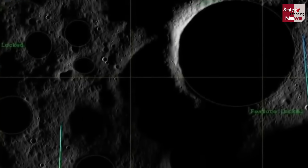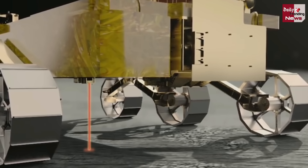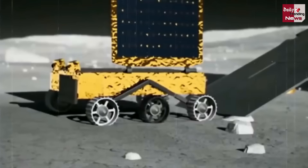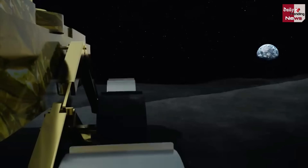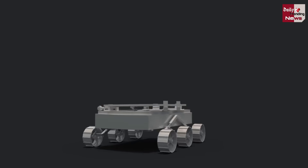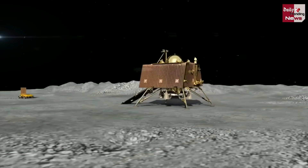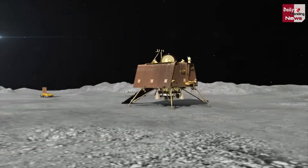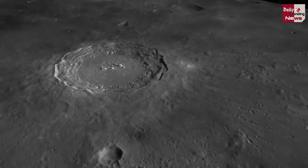Chand ki satah par rasayanic tattvon aur mitti, paani ke kanon jaise prakritik sansaadhanon ko dekha jayega. Rover chand ki banavat ko lekar hamari jaankari mein mahatvapurn izafa karega. Rover mein seismometer bhi shamil hai taaki chand ke bhukanp ko mapa ja sake. Vaigyanik is tarah ke parikshan se chand ki satah ke taapman aur vatavaran ke anya tattvon ko jaan sakenge.